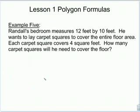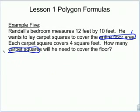Example 5. Randall's bedroom measures 12 feet by 10 feet. He wants to lay carpet squares to cover the entire floor area. Each carpet square covers 4 square feet — how many carpet squares will he need to cover the floor? We have to do two things: first, find the area of his floor; second, figure out how many carpet squares he needs to buy. First, we're going to draw a picture of his floor — his room is a rectangle.